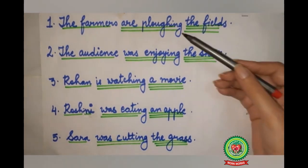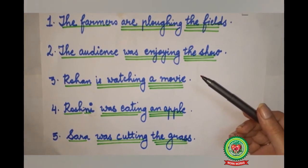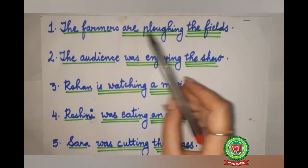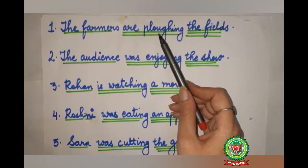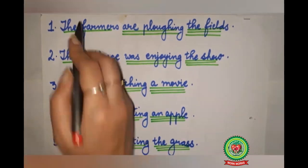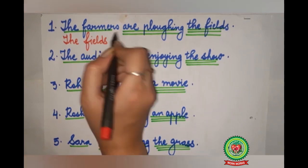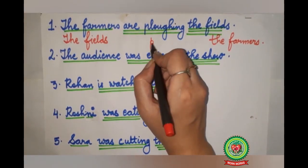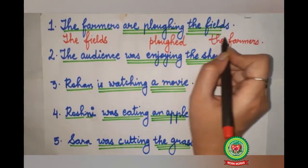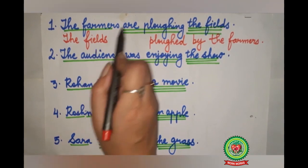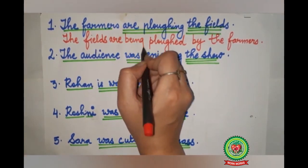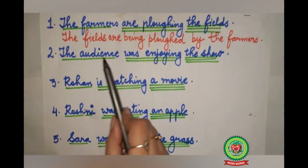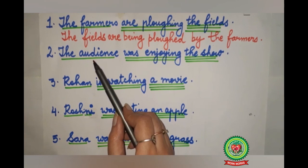Now these are the examples of continuous tense. Whenever we are given continuous tense in '-ing' form, then in the passive voice it will be changed to V3, and before that we have to add the word 'being'. First sentence: 'The farmers are plowing the fields.' Who? The farmers — subject, single underline. 'Are plowing' — action word, double underline. What? The fields — triple underline. The fields come in the beginning, the farmers go to the last. 'Plowing' changes to 'plowed'. The fields are plural, so we use 'are' and add 'being'. The answer: 'The fields are being plowed by the farmers.' Full stop.